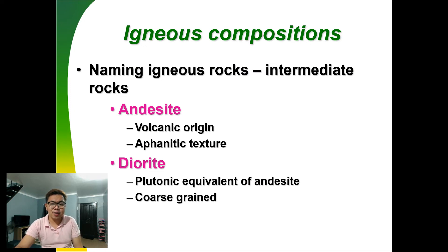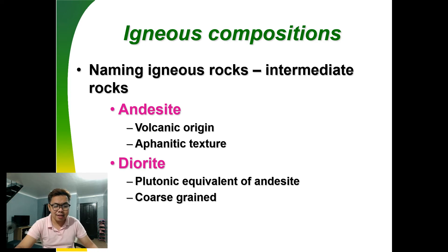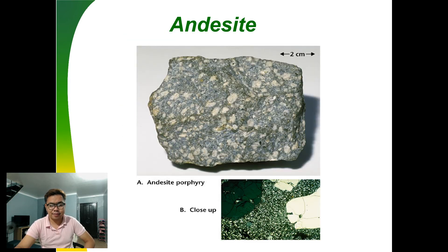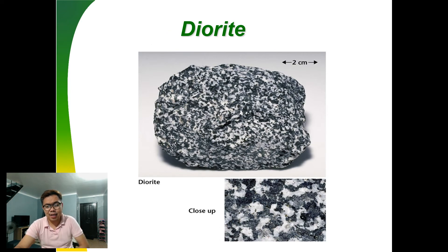For intermediate igneous rocks, we have andesite and diorite. Andesite is of volcanic origin with aphanitic texture. Diorite is plutonic with coarse-grained texture. You can already differentiate them just from their texture alone — here is andesite and here is diorite.